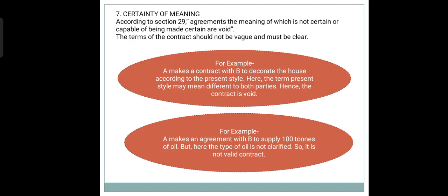Certainty of Meaning. The meaning should be certain, clear, and not left vague — it should be precise. Agreements the meaning of which is not certain and capable of being made certain are void in the eyes of law. For example, A makes a contract with B to decorate the house according to the present style — the term 'present style' may mean different things to both parties, so the contract is void. Another example: A makes an agreement with B to supply 100 tons of oil, but which type of oil is not clarified, so it is not a valid contract.